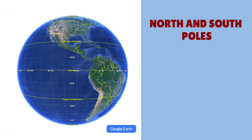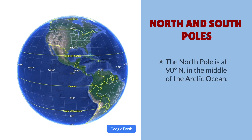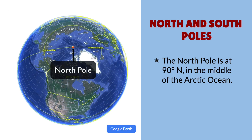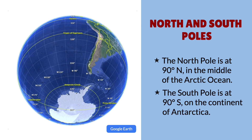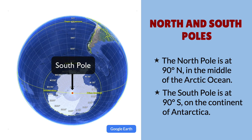Let's use a globe to talk about the north and south poles. The north pole is the northernmost location on Earth at 90 degrees north. It's located in the middle of the Arctic Ocean, in a location that's almost always covered with sea ice. The south pole is the southernmost location on Earth, at 90 degrees south, and it's on land on the continent of Antarctica.